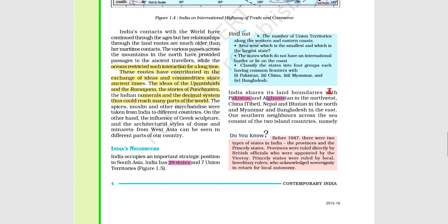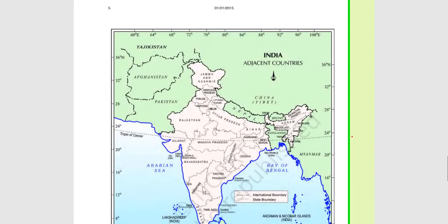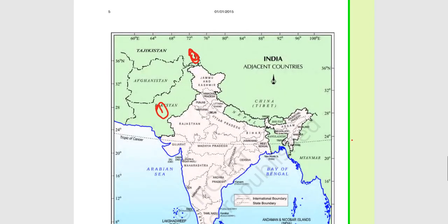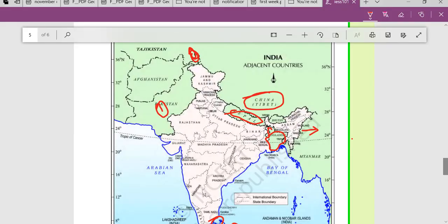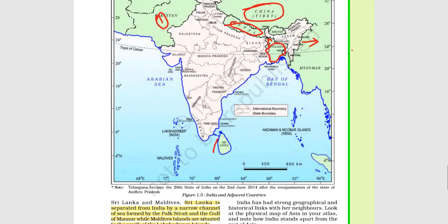India has 29 states and 7 union territories. Let us look at its neighbors: in the north west is Pakistan, followed by Afghanistan. In the north and north east are China and Nepal. To the east are Bangladesh and Myanmar. Bhutan is another small but very important ally of India. Sri Lanka is the southernmost neighbor, and there is also the Maldives.